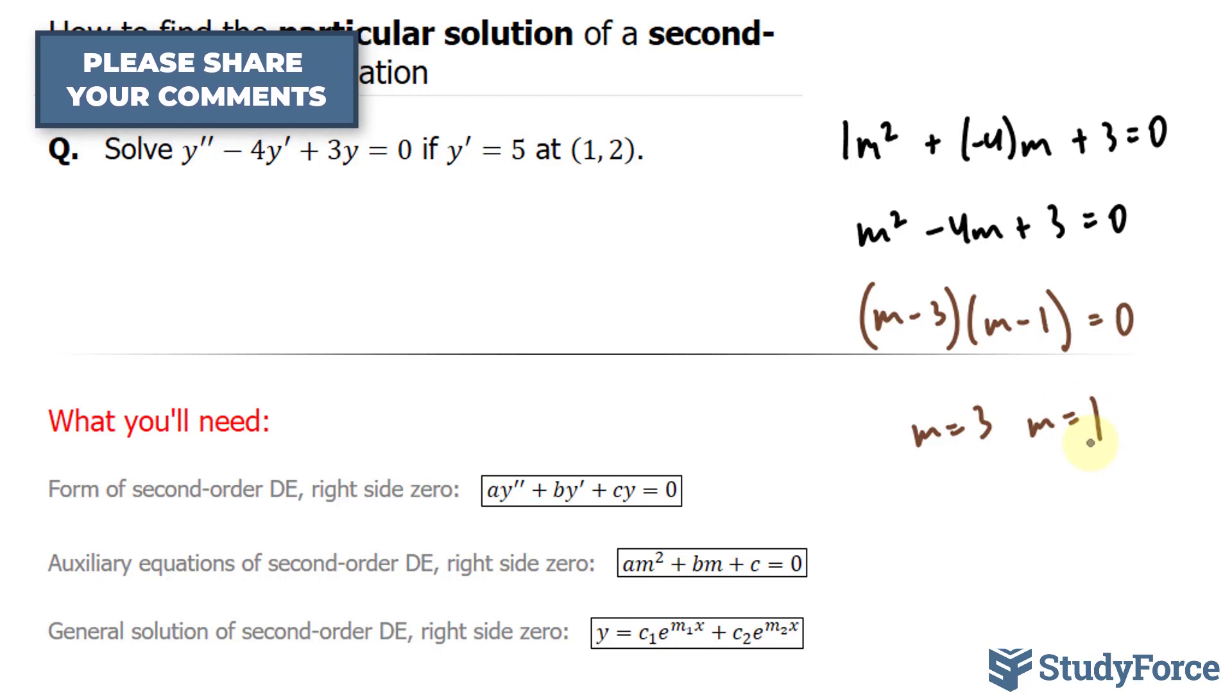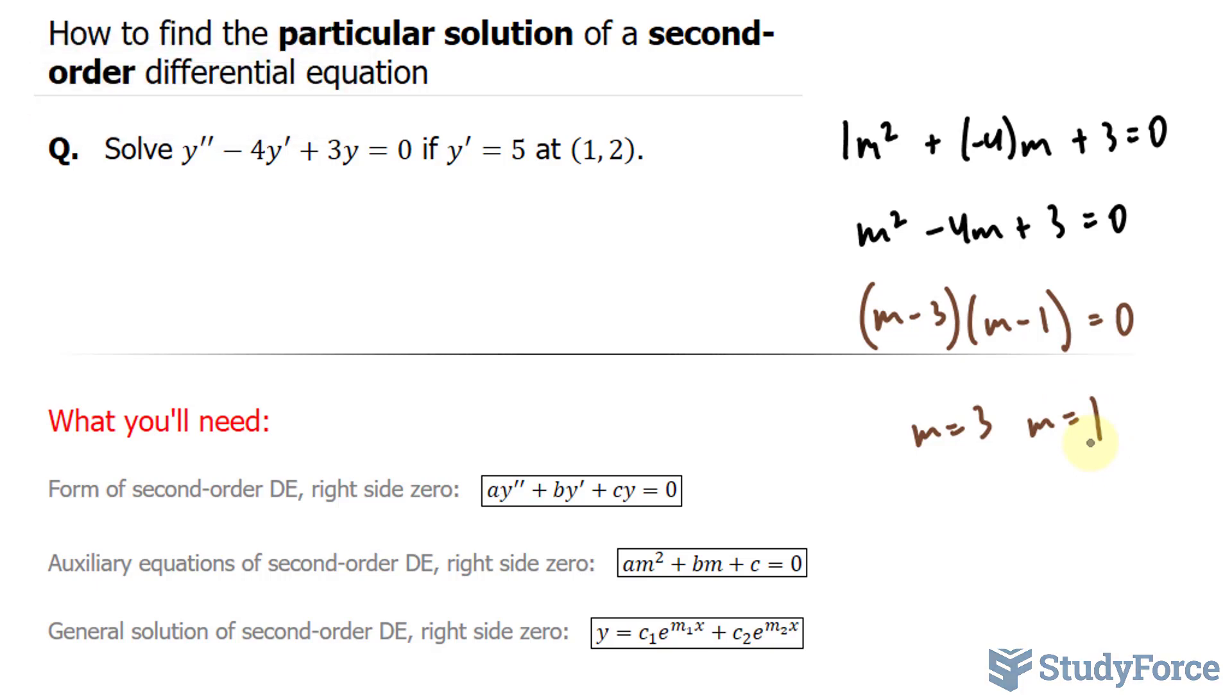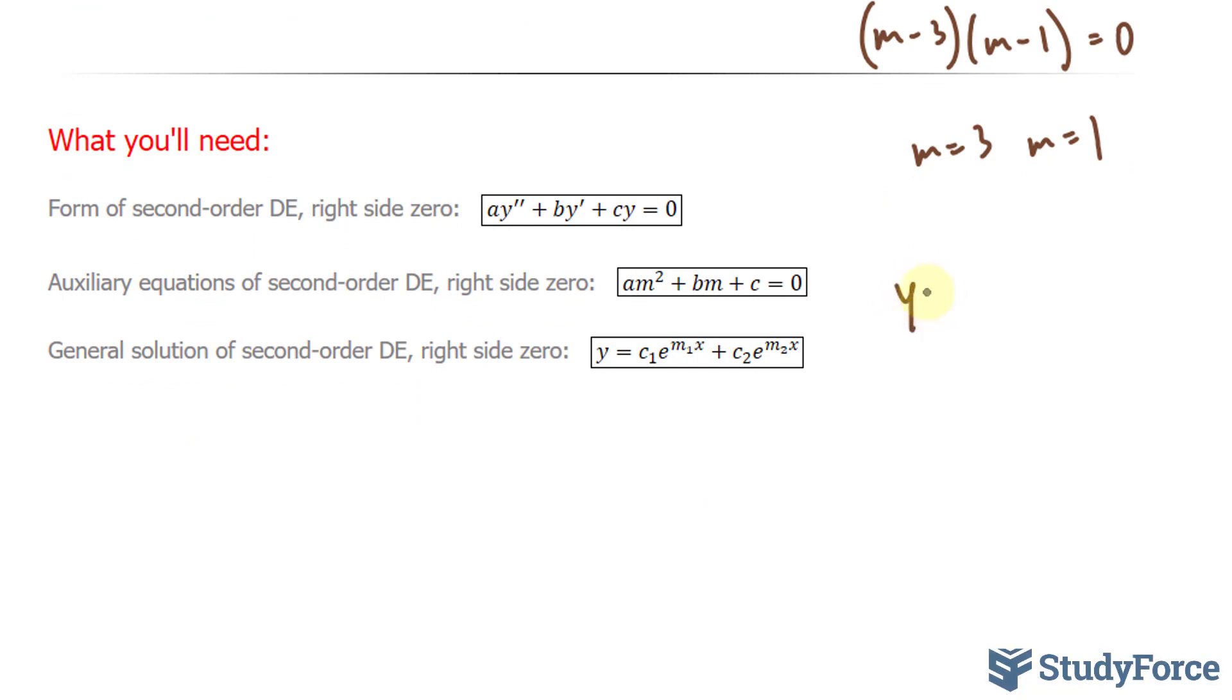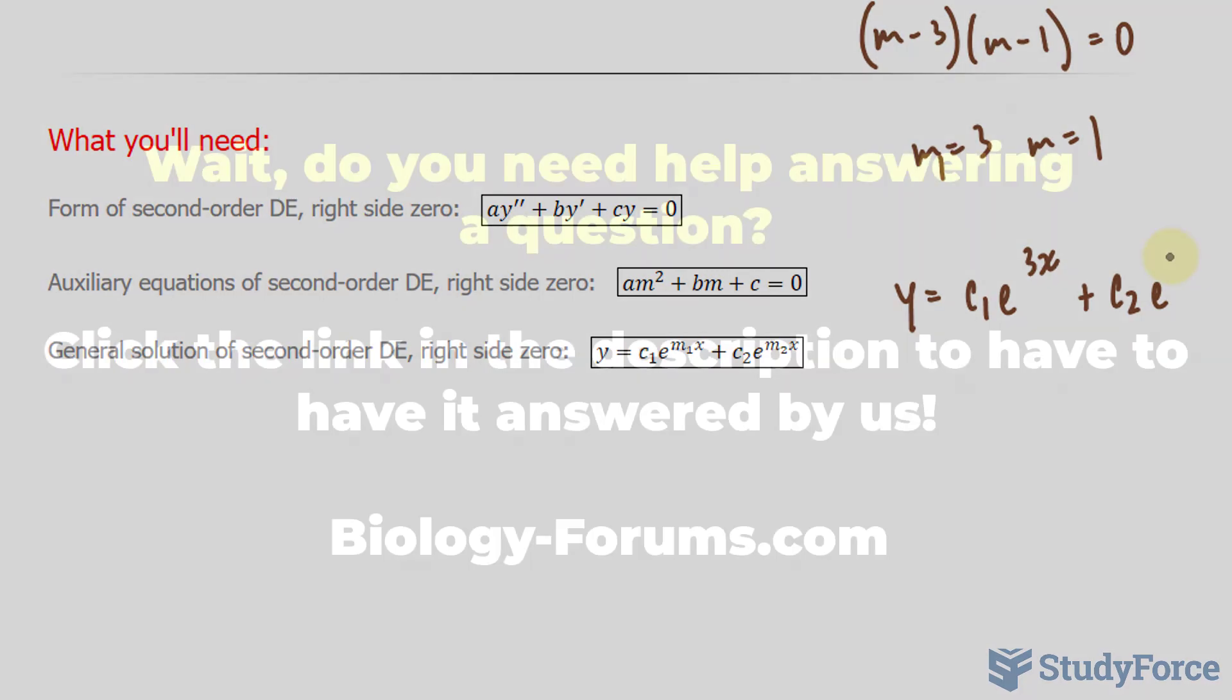Now, using these values of m, we can substitute them into the general solution of the second order differential equation, and that's shown below. We have y is equal to c1, our first constant, e to the power of, let's call this m1, 3x plus c subscript 2 times e to the power of our second m times x.